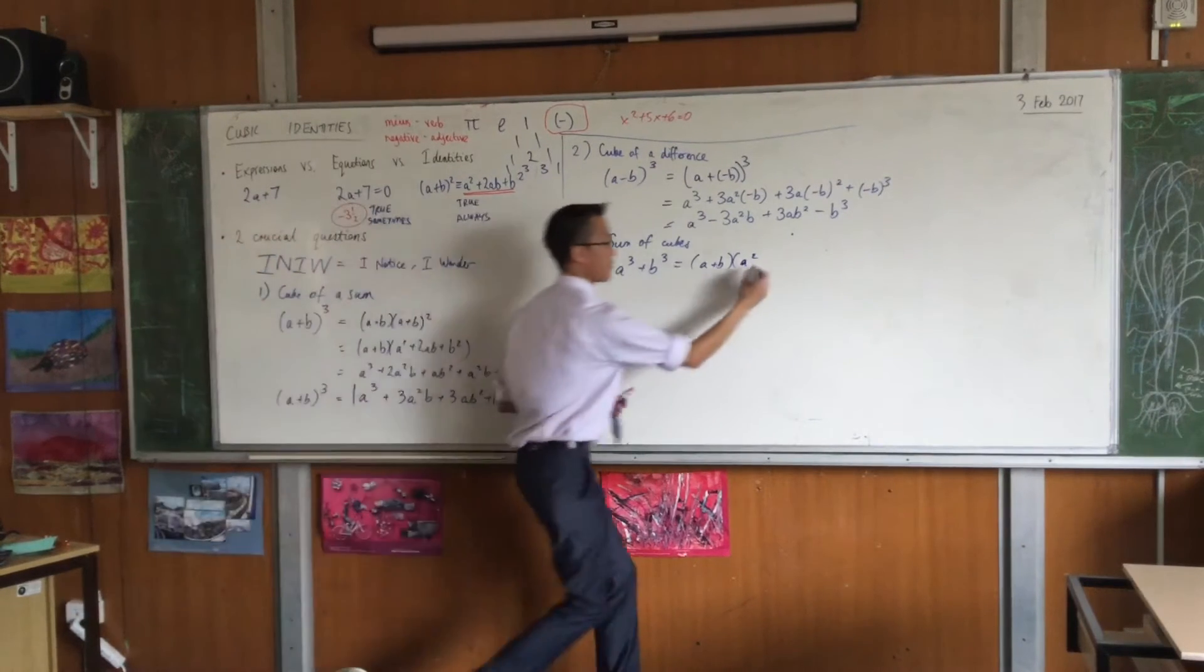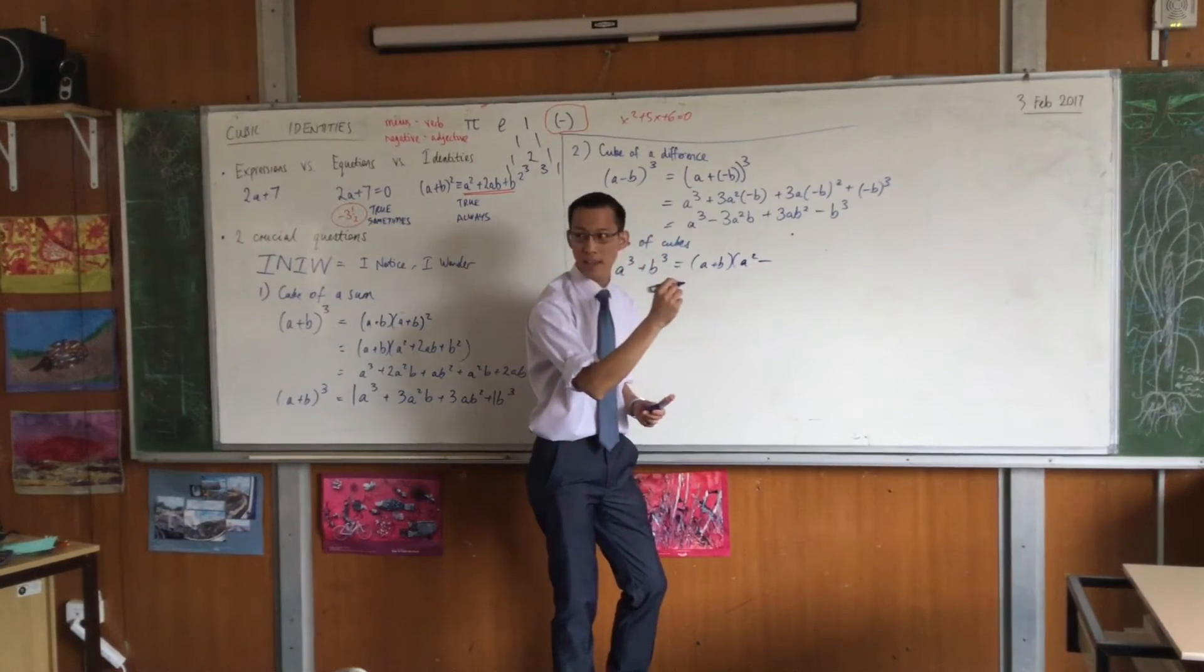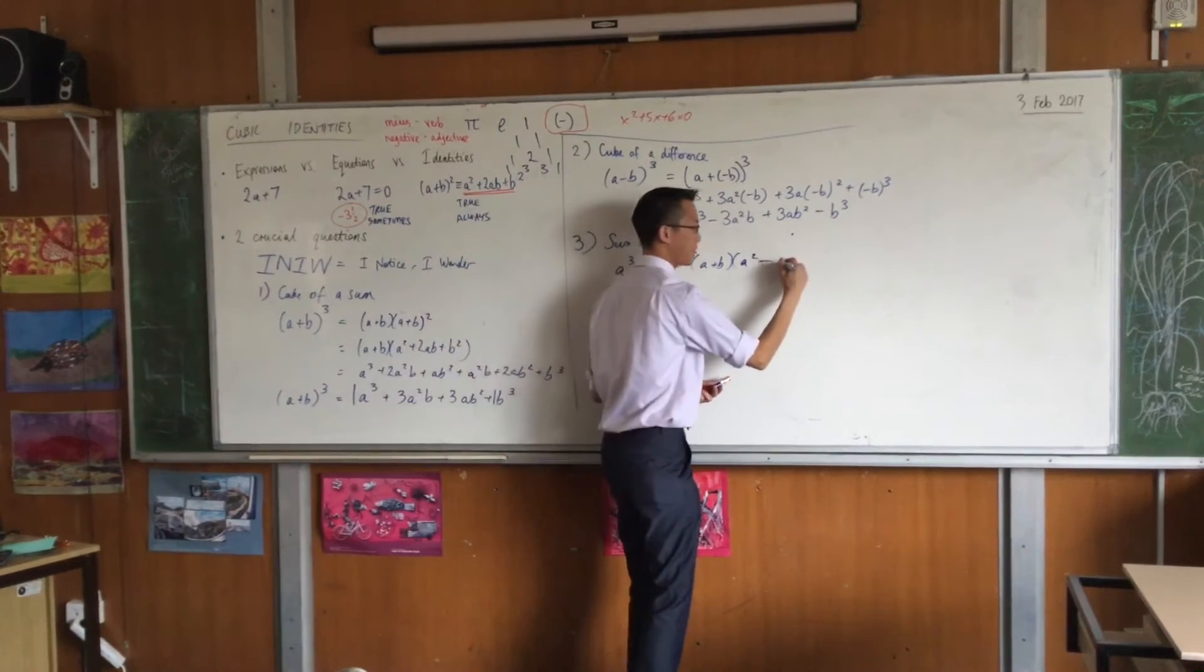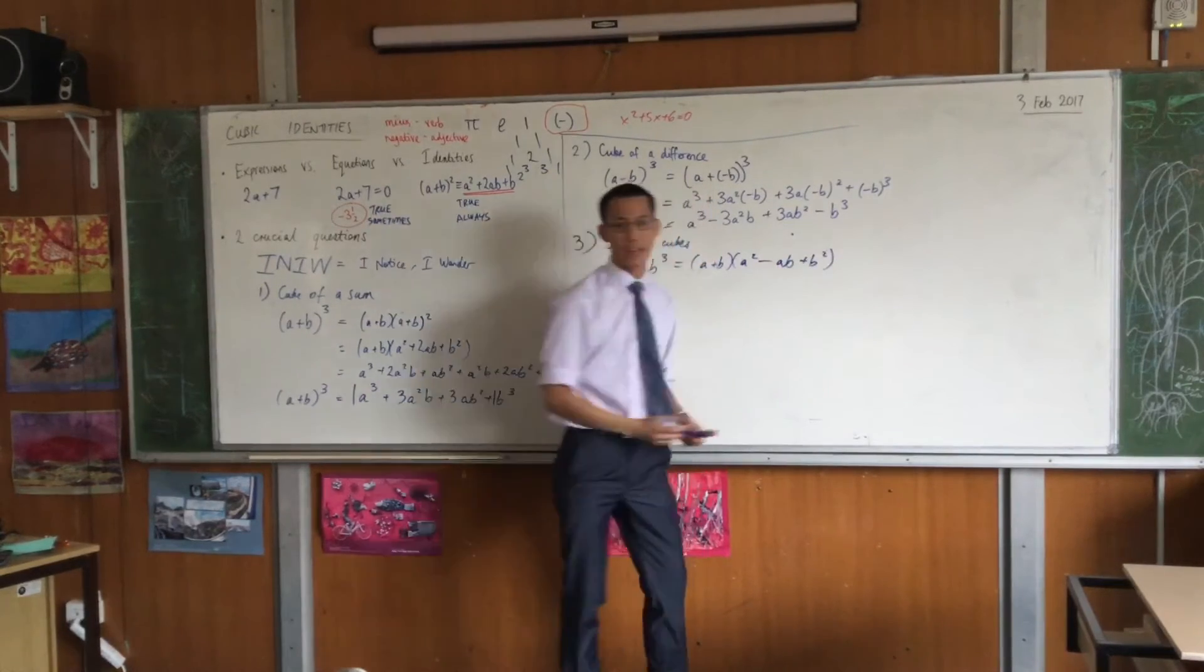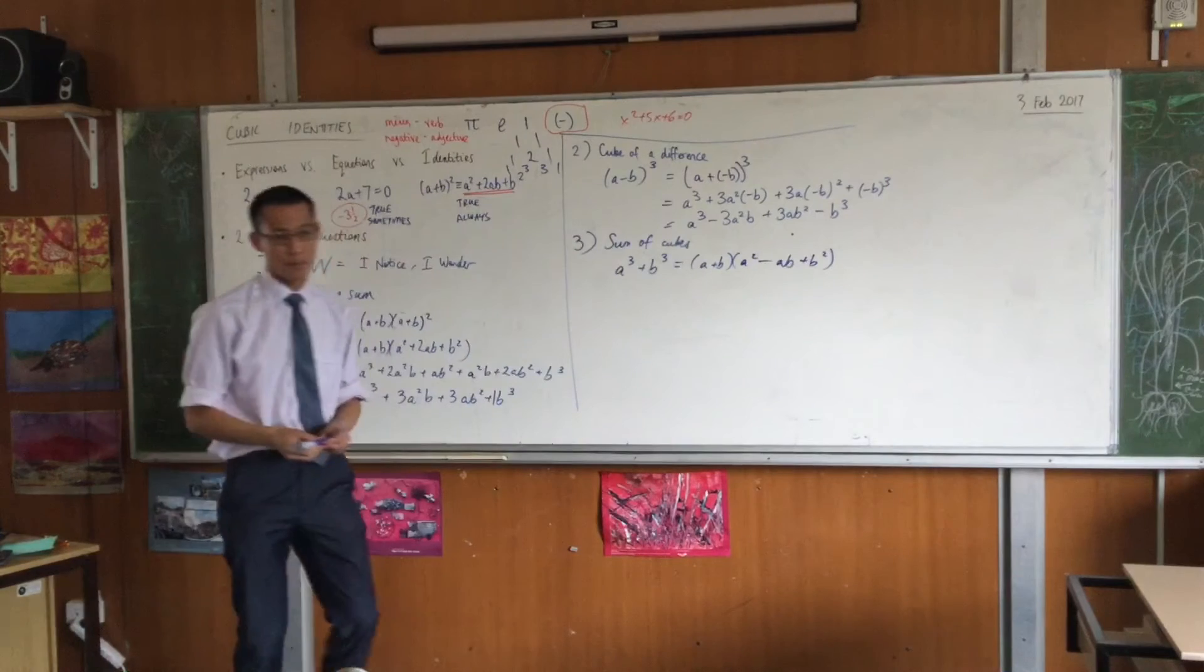Minus. And then it's not 2ab, it's just 1ab, just one of them. And then you've got the b squared. That is the sum of cubes.